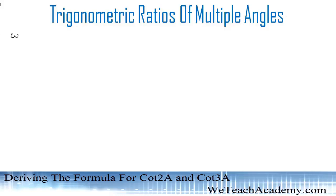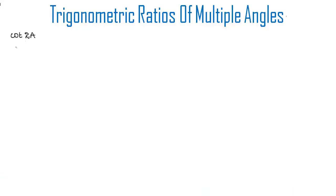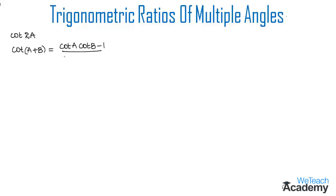In order to derive the formula for cot 2a, we will use the formula of compound angle, which is cot(a + b) = (cot a · cot b − 1) / (cot b + cot a). We can derive cot 2a, which is nothing but cot(a + a), which is in the form of cot(a + b).